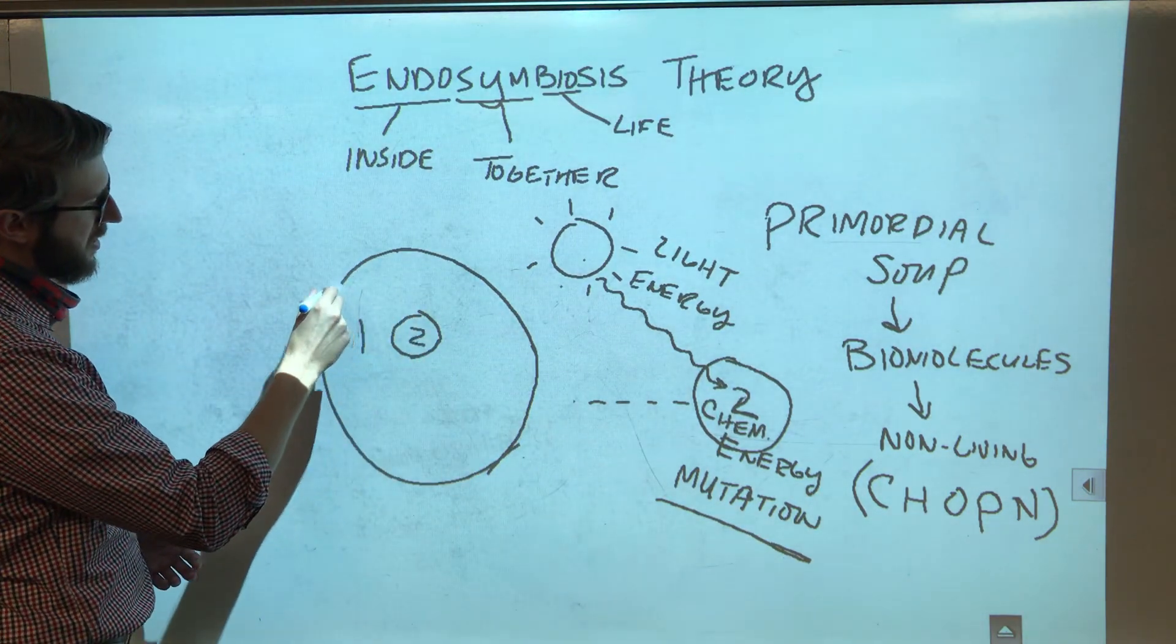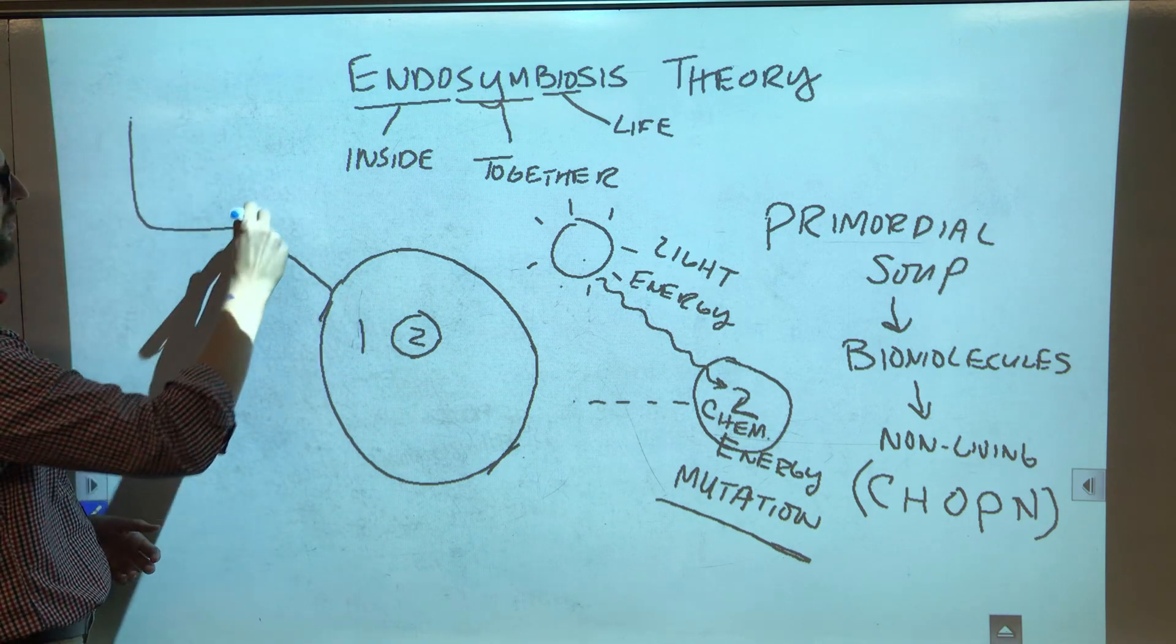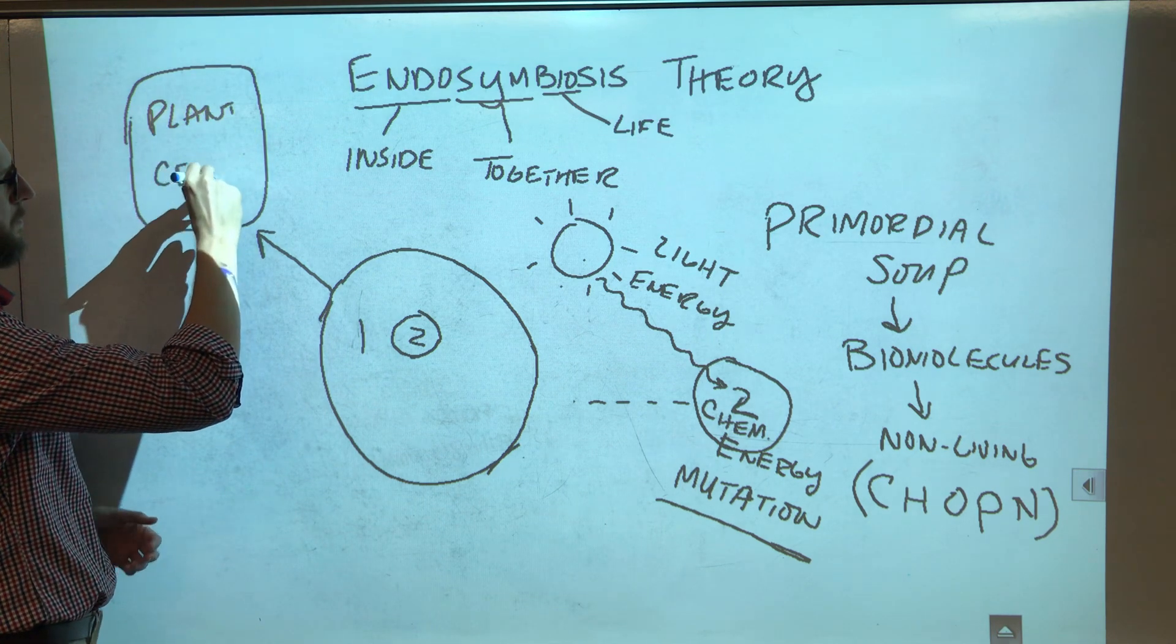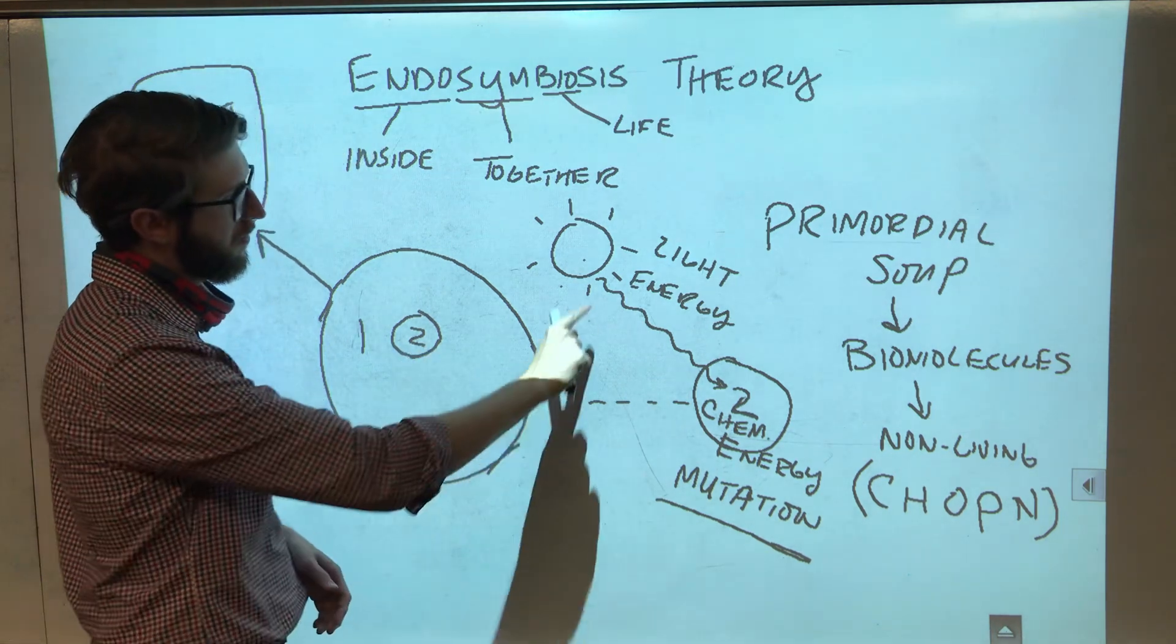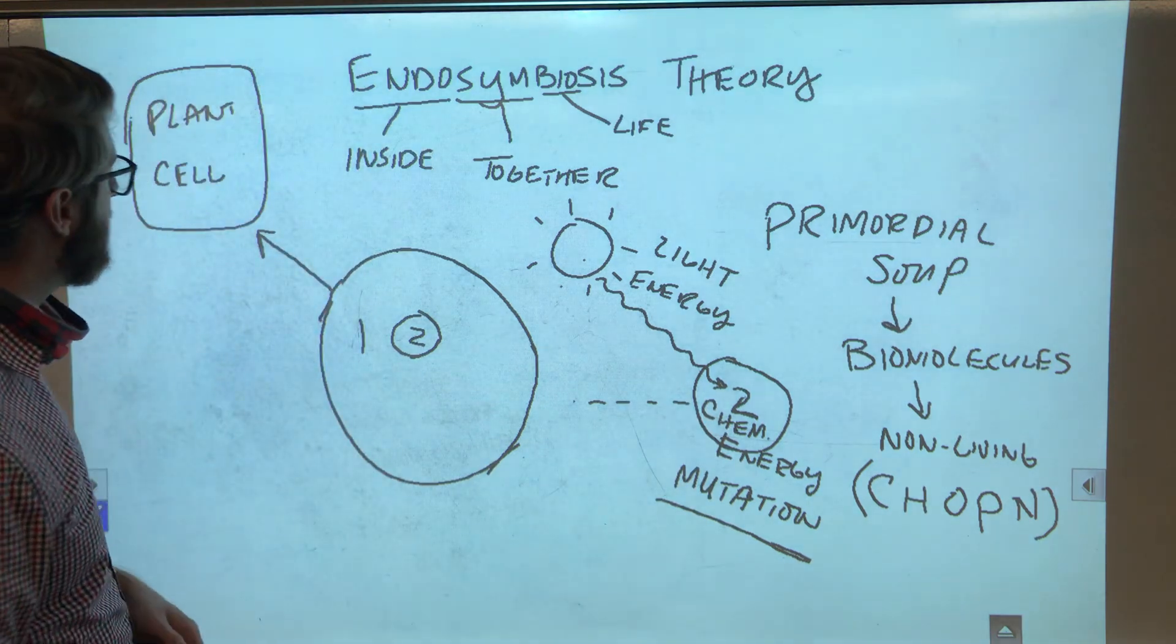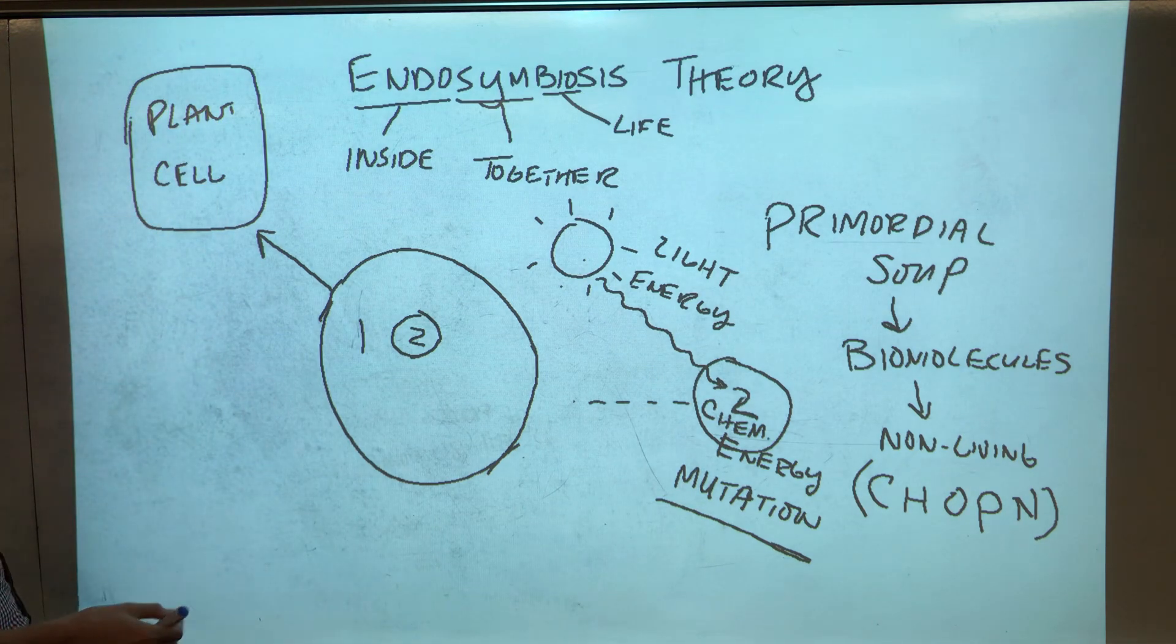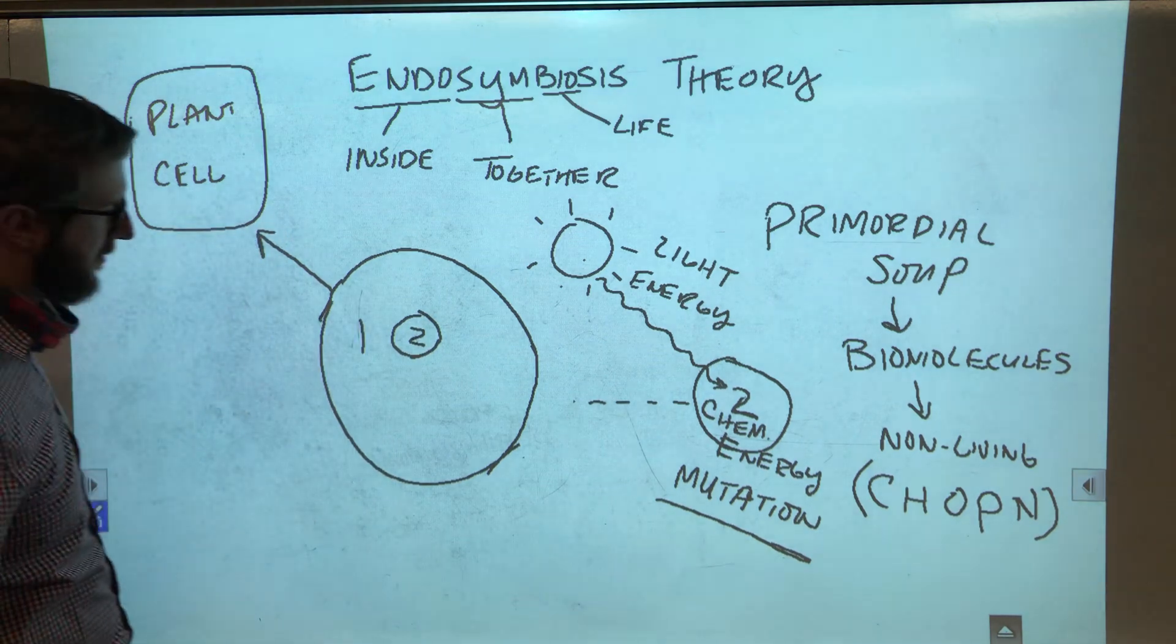And so it kind of works out. Now over time, this thing would have evolved into a modern day plant cell. It makes sense because if little cell two can turn sunlight into energy, then that is what photosynthesis is.